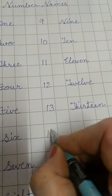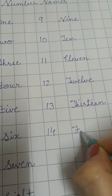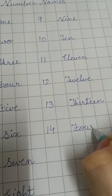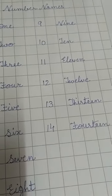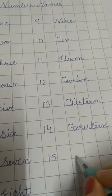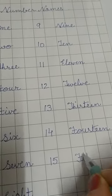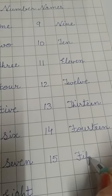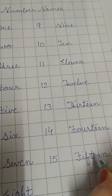Next is 14. Four. You all know the spellings of 4? F-O-U-R, four. Teen. T-E-E-N, teen. Fourteen. Next. 15. Fifth. F-I-F, fifth. And teen. T-E-E-N, teen. Fifteen.